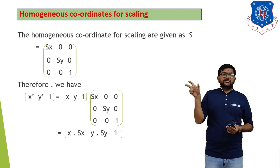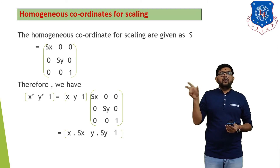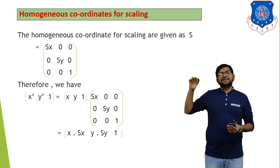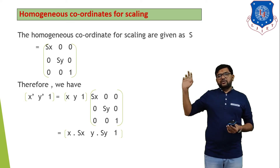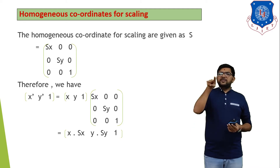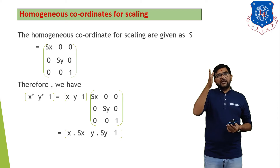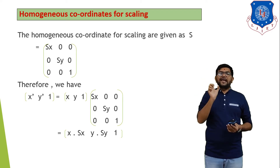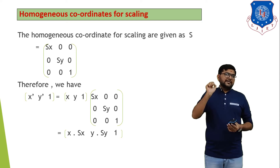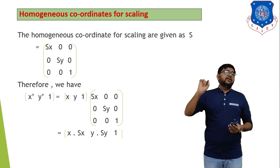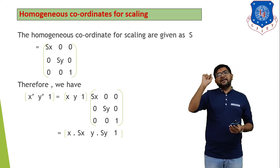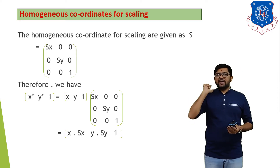Therefore, the new position [X', Y', 1] equals old position [X, Y, 1] multiplied by the scaling matrix [SX, 0, 0 / 0, SY, 0 / 0, 0, 1]. Multiplying: X' = X·SX; Y' = Y·SY; third coordinate = 1. SX indicates scaling in the X-axis and SY indicates scaling in the Y-axis.